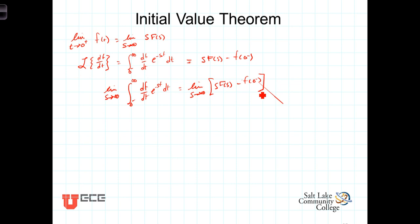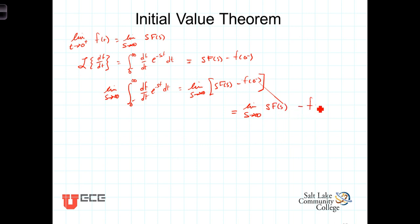Looking first at the right-hand side, because the second term is a constant and independent of s, the right-hand side becomes simply the limit as s approaches infinity of s·F(s) minus the initial value f(0 minus).